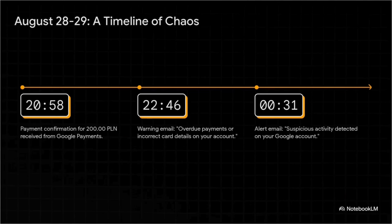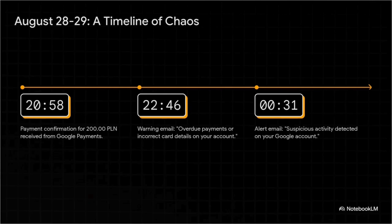We're talking less than four hours here. His account goes from a totally normal 200 PLN payment confirmation to a warning about overdue payments, and then — boom — a scary alert about suspicious activity. These automated messages are all over the place, totally contradictory. One minute they're saying thanks for the payment, the next they're screaming you're overdue. It makes absolutely zero sense.